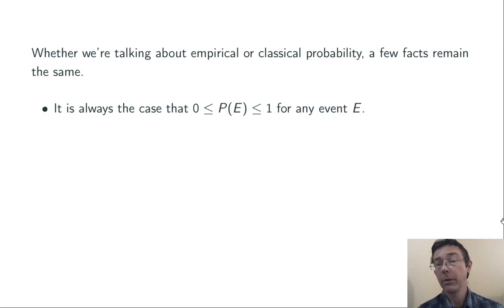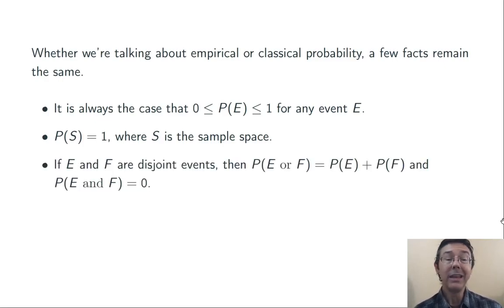Regardless of whether we're talking about empirical or classical probability, a few facts are always going to be consistent. First of all, for any event, the probability is going to be between 0 and 1. 0 is going to be an impossible event, and 1 is going to be a certain event. If S is the sample space, then the probability of S occurring is 1. Something is going to happen when you run a probability experiment. If E and F are disjoint events with no outcomes in common, then the probability of at least one of them occurring is the sum of the probabilities that each one will occur, and the probability of them both occurring, of course, is going to be 0 by the definition of disjoint.